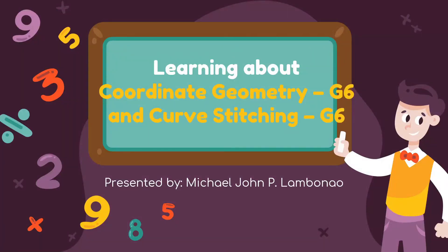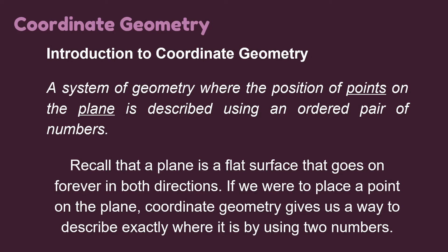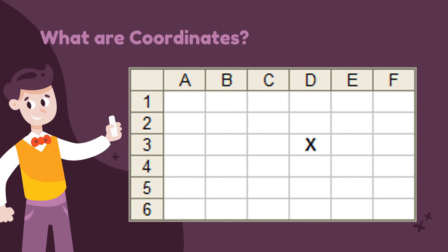Hello, I am Michael John P. Lambunao and I'll be presenting our last topic for today's presentation which is learning about coordinate geometry and curve stitching. First, let's talk about coordinate geometry. Introduction to coordinate geometry. It is a system of geometry where the position of points on the plane is described using an ordered pair of numbers. Recall that a plane is a flat surface that goes on forever in both directions. If we were to place a point on the plane, coordinate geometry gives us a way to describe exactly where it is by using two numbers.